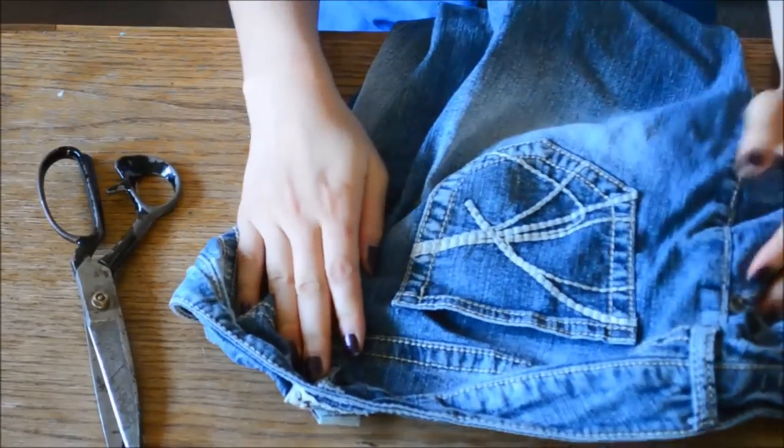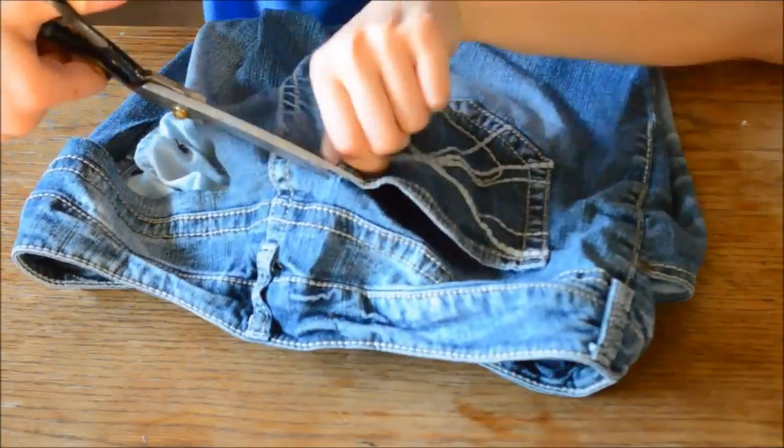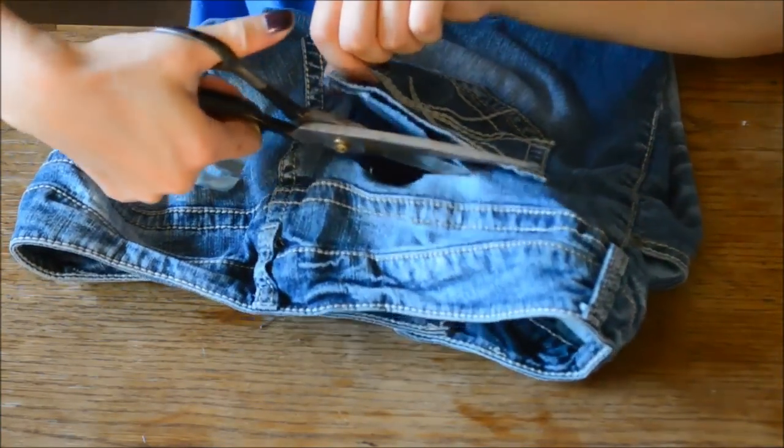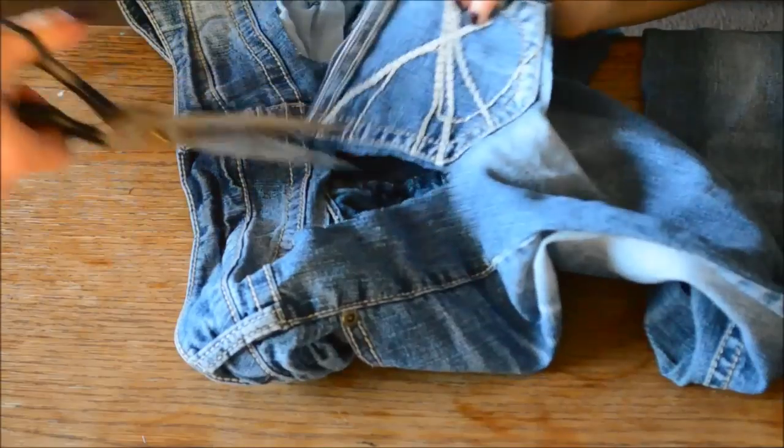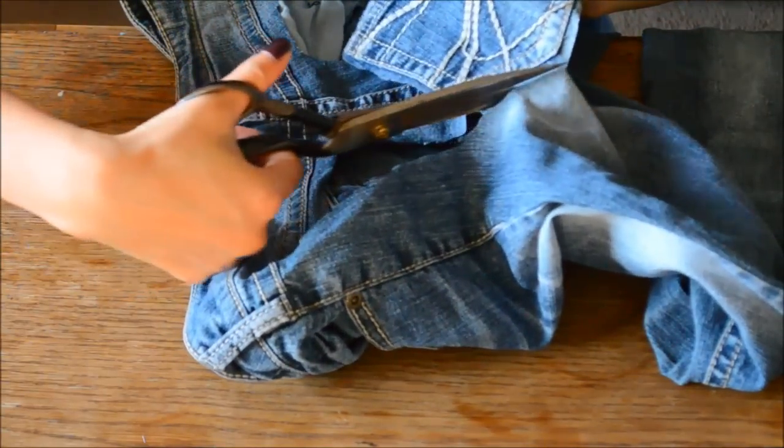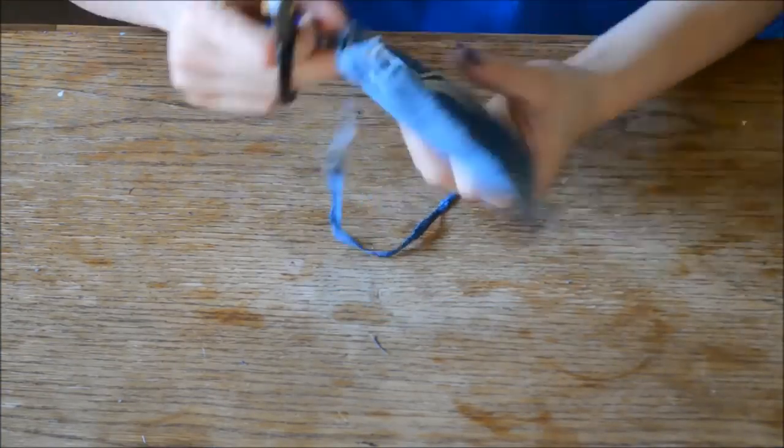Now we move on to our next notebook cover which is the denim pocket one. You're going to first get out a pair of shorts or jeans, whatever you want, and you're just going to cut out the pocket. And to be honest, you can actually make your own pocket. It's pretty easy, you just cut out a shield shape. I'm just going to roughly cut this and I'm just going to make it all neat and nice after the initial cut.